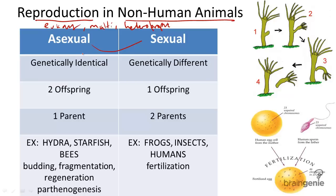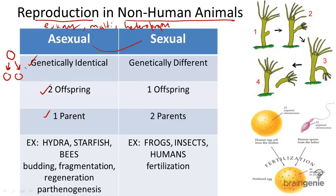The first major difference between asexual and sexual reproduction is that in asexual reproduction, one parent produces two genetically identical offspring. And conversely,